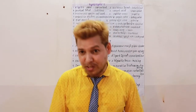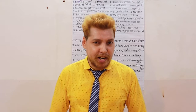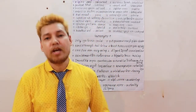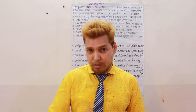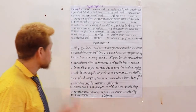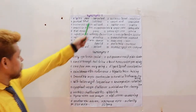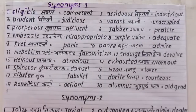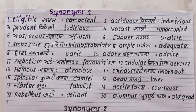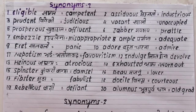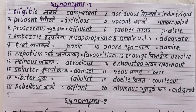Good evening everyone. Today we are learning 40 special word meanings which are very important for daily use. We have synonyms — words with the same meaning, not antonyms. There are two sets: synonyms one and synonyms two, with 20 words each, making 40 words total.